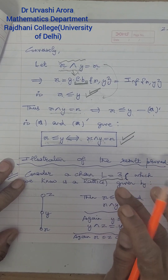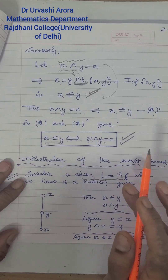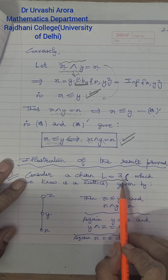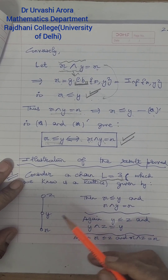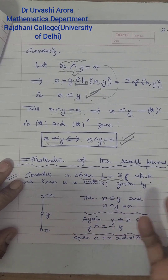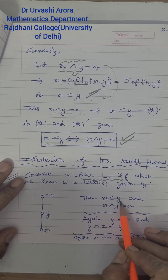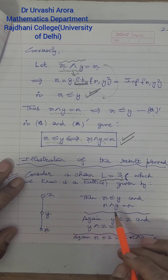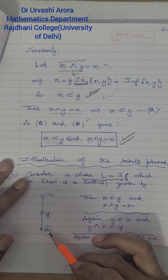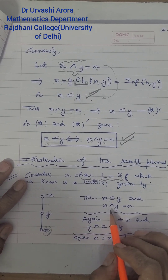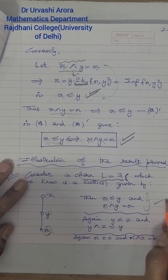So for any chain, not necessarily of three elements, if you pick up any pair of elements, they will always be related and you can always find their join and meet. I am taking a chain of three elements and marking them as x, y, z. If I compare x and y, x is related to y since x ≤ y in the chain. Finding the meet of x and y means finding the greatest lower bound. There is only one lower bound of x and y, which is x, so x is also the greatest lower bound. Therefore x meet y = x, which is the element on the left. The result is verified for this pair.